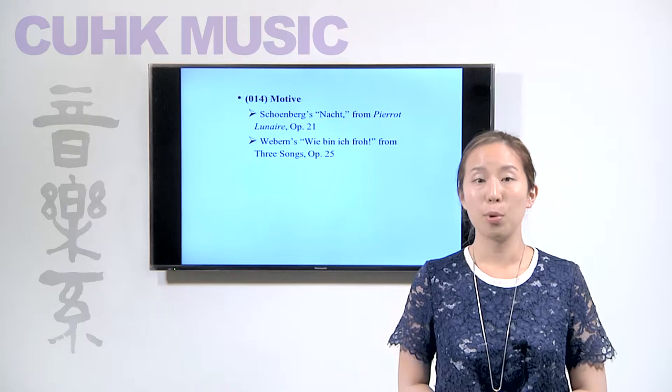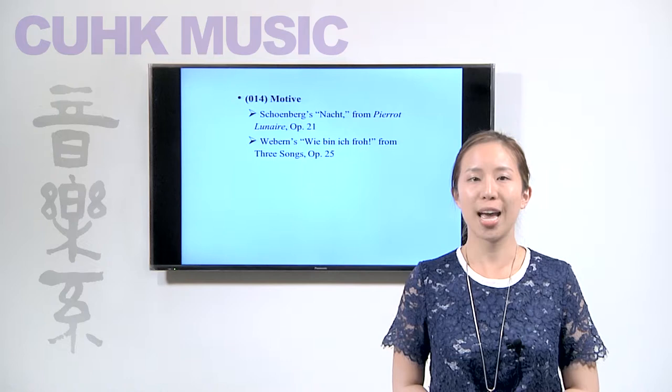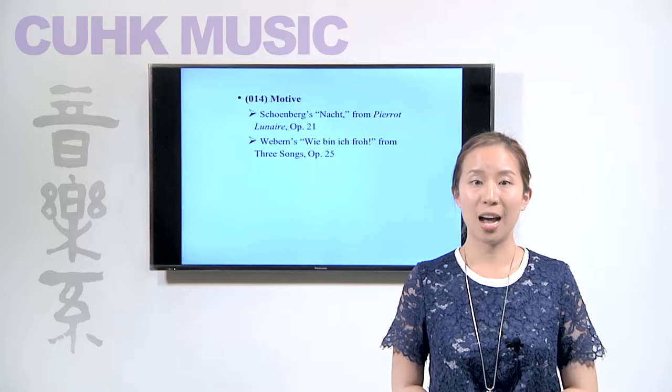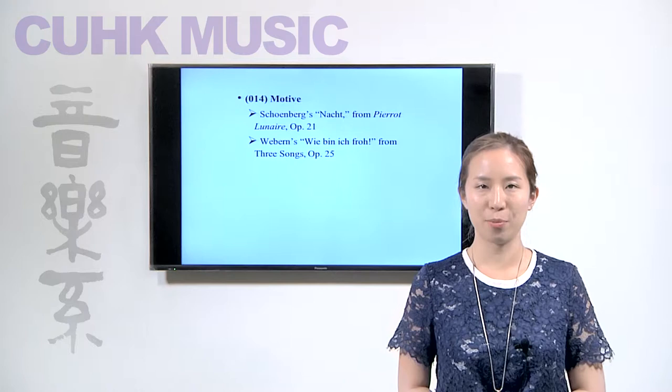In this video, we will survey how the set called O-1-4 is used and transformed melodically and harmonically in Schoenberg's Nacht from Pierrot Lunaire, Op. 21, and also Webern's Wie bin ich froh from Three Songs, Op. 25.